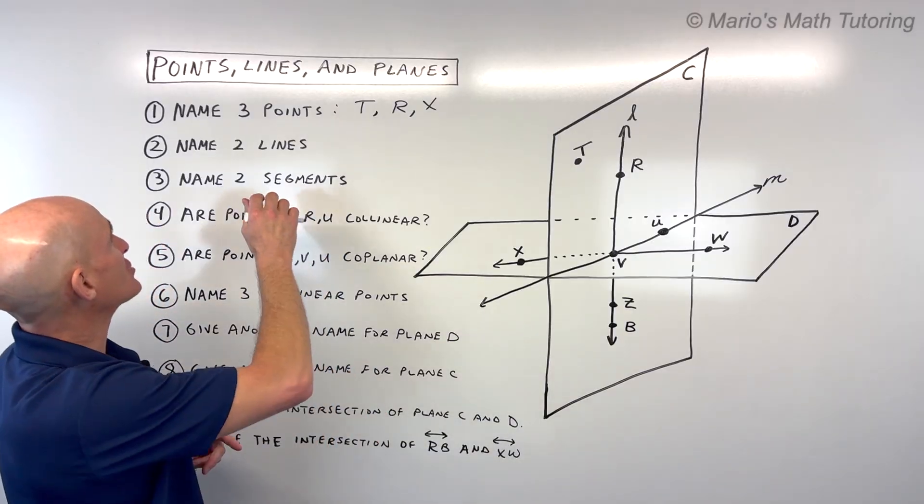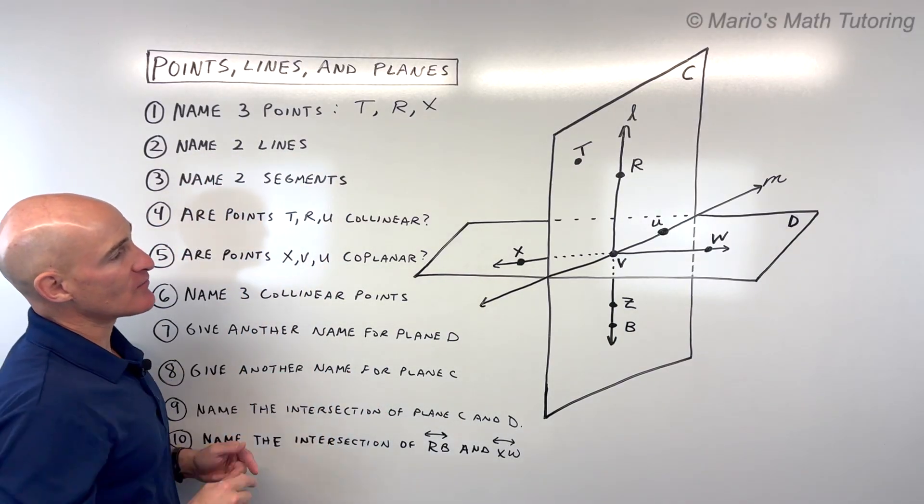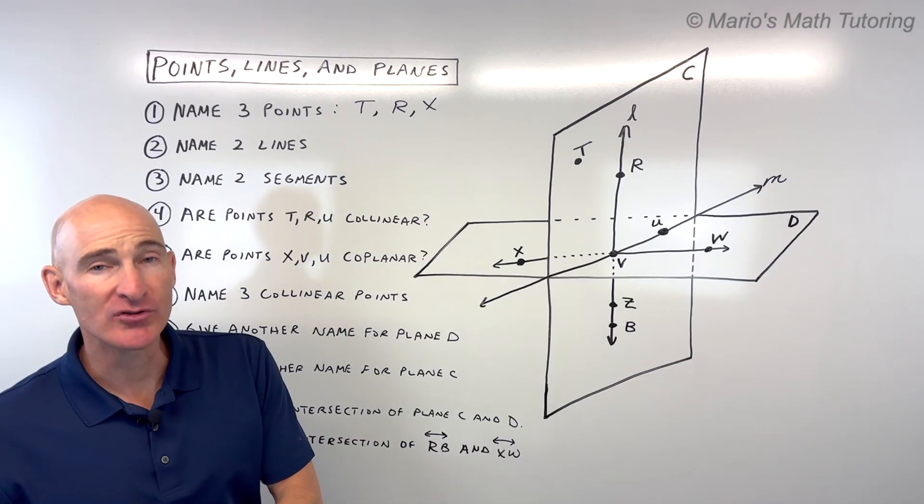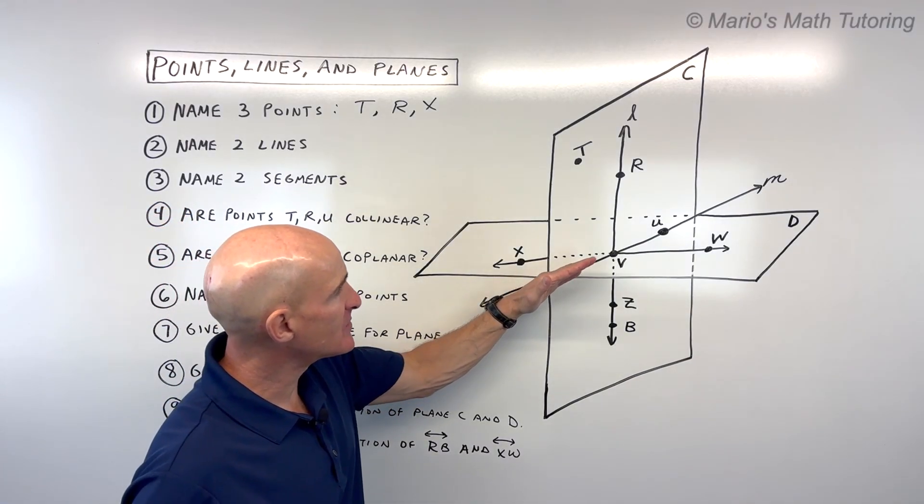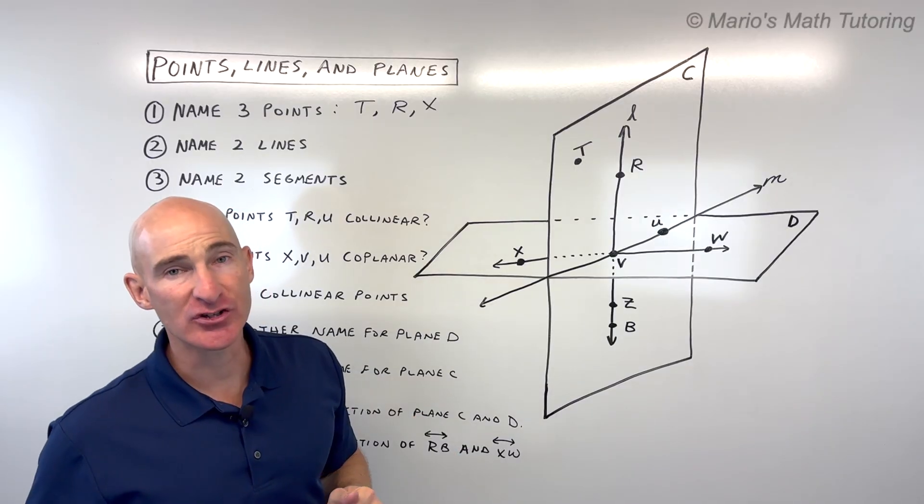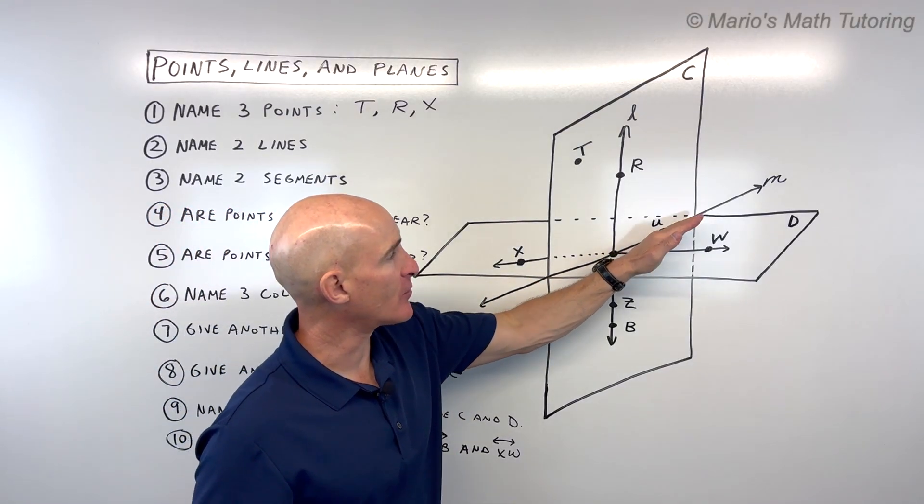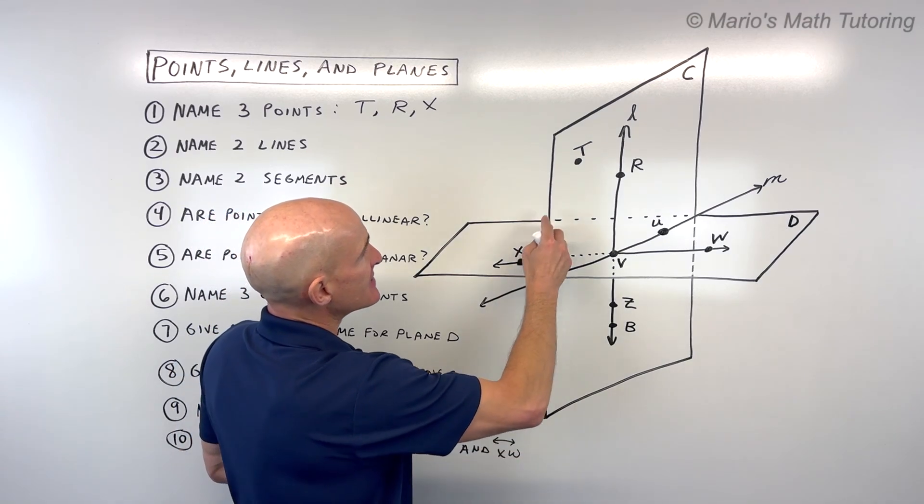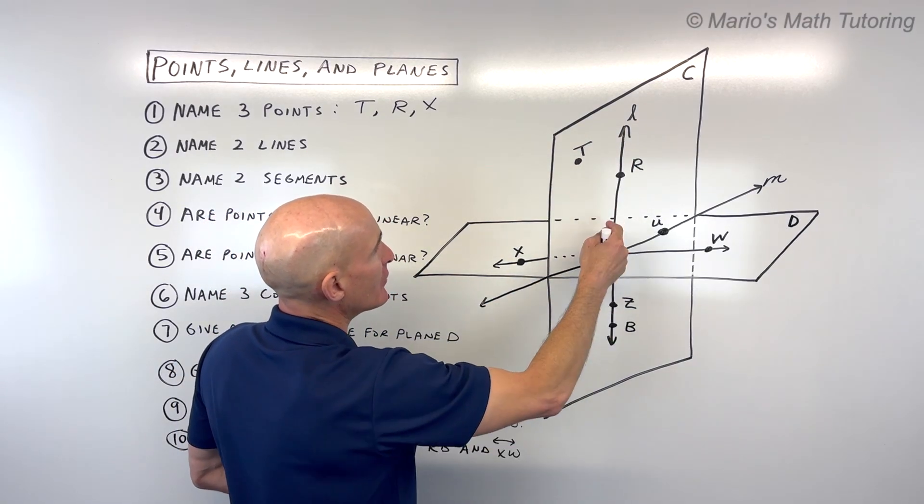The next question says name two lines. Do you see two lines in the diagram, and how would you label those lines? A line keeps going in both directions. You learn this in algebra. It's an infinite number of points. For example, I can see this line right here.